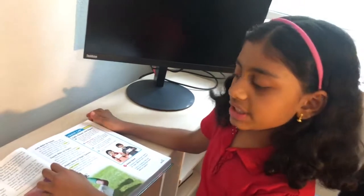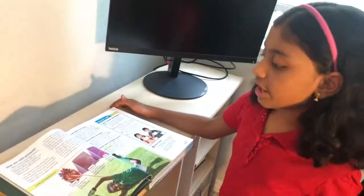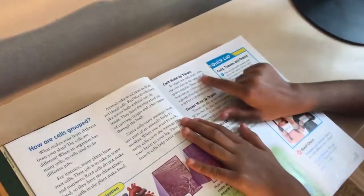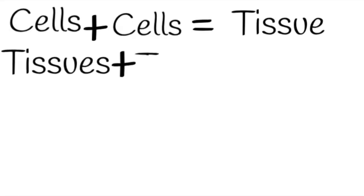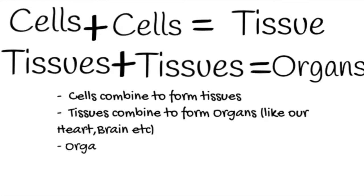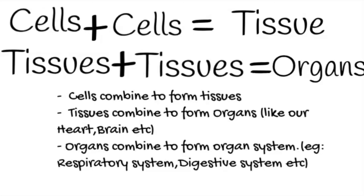Now we learned about the comparison between plant cells and animal cells. Let's look at how our cells group. Cells make up tissues. In organisms with many cells, the ones that do the same job all group together — these cell groups form tissues. A tissue is a group of similar cells that work together to perform a job. Tissues make up organs, and organs group together to form organ systems. Cells group together to make tissues, just like bricks group together to make walls.